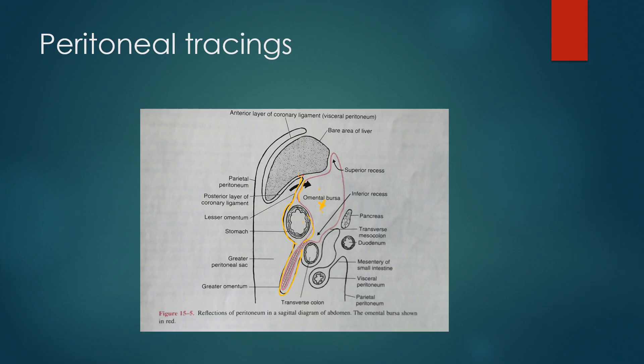The lesser sac is bounded posteriorly by the posterior abdominal wall, the posterior parietal peritoneum, and in front of the pancreas. The pancreas is retroperitoneal. This lesser sac has a superior recess going up to the diaphragm and an inferior recess going up to the omentum. This arrow indicates entry to the epiploic foramen. You can get entry into the lesser sac from the greater sac by putting your finger behind the lesser omentum. This is known as the foramen of Winslow.